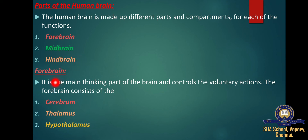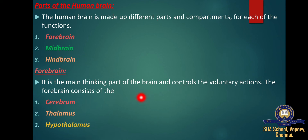The forebrain is the main thinking part of the brain and controls voluntary actions. Voluntary actions are actions initiated by our own conscious will — the brain sends impulses via the spinal cord through interneurons and finally motor neurons. This action is under the control of will, and thus it is known as voluntary action.